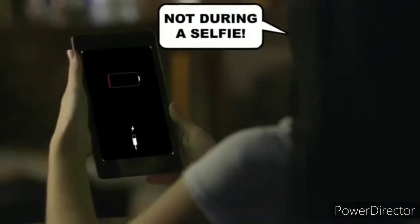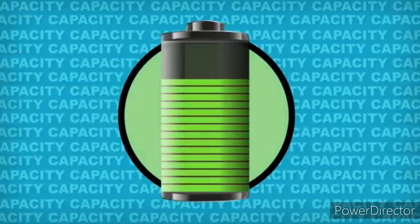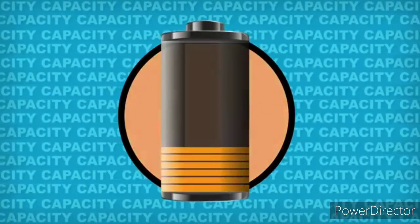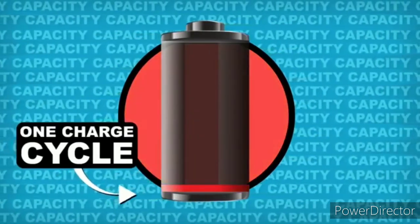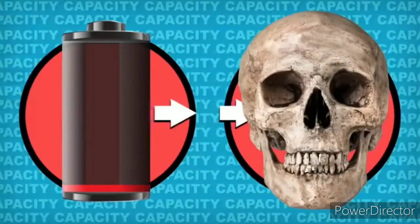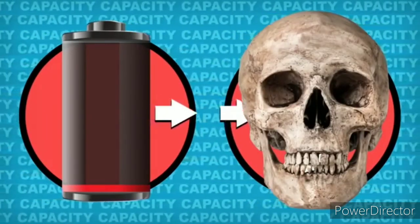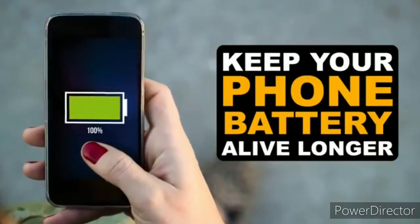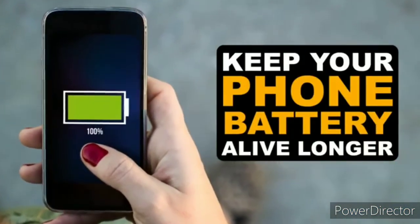Every time you burn through 100% of the battery's charge, which is called capacity, you take the battery through one charge cycle. Each cycle inches the battery closer to death by shaving off some of its total capacity. Here's how to keep your phone's battery charge and life lasting longer with science.